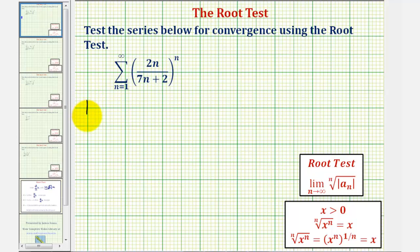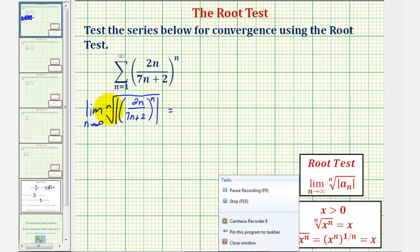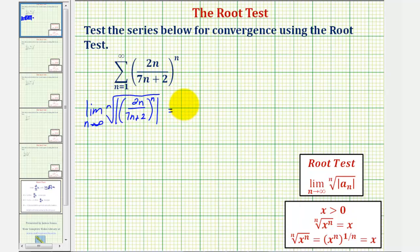So we'll take the limit as n approaches infinity of the nth root of the absolute value of 2n divided by the quantity (7n + 2) raised to the nth. When we take the nth root of this fraction raised to the nth power, this simplifies perfectly to just 2n divided by (7n + 2). This gives us the limit as n approaches infinity of 2n divided by (7n + 2).